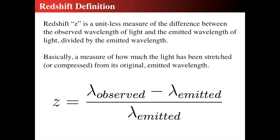Cosmological redshift z is defined as (λ_observed − λ_emitted) / λ_emitted. It has no units because the definition is embedded in it. Z is the standard way we talk about redshift. If the redshift is zero, the observed equals the emitted — basically right next to you. But if the galaxy is rushing away so quickly that the observed wavelength is twice the emitted wavelength, that would be a redshift of two.